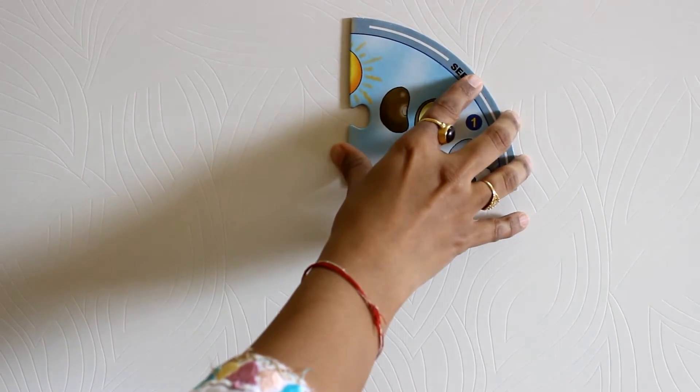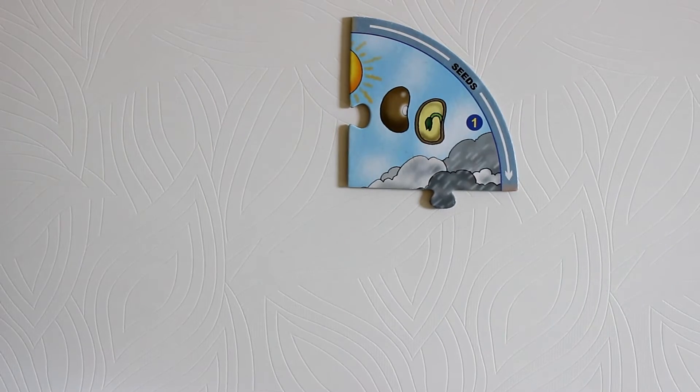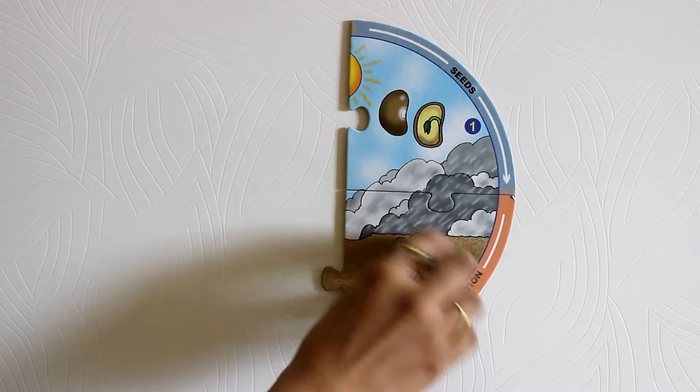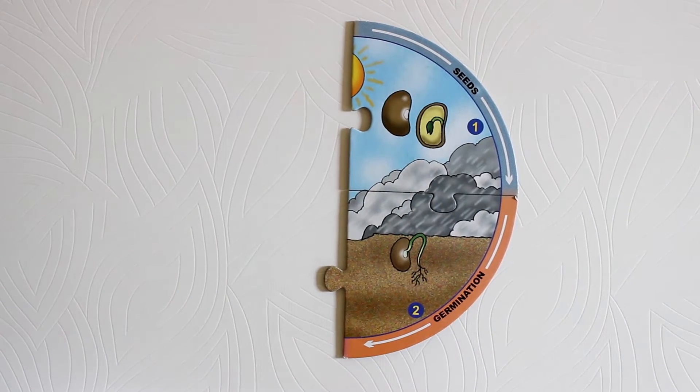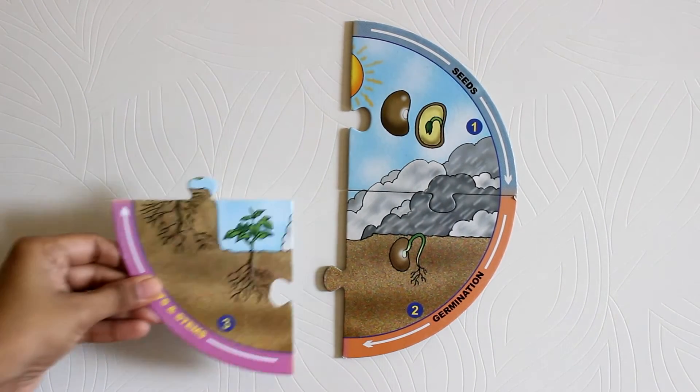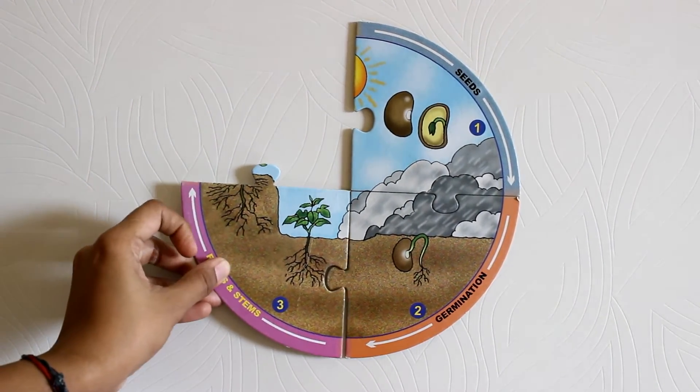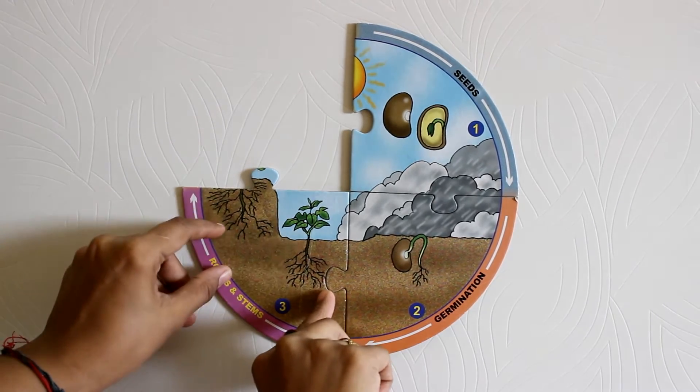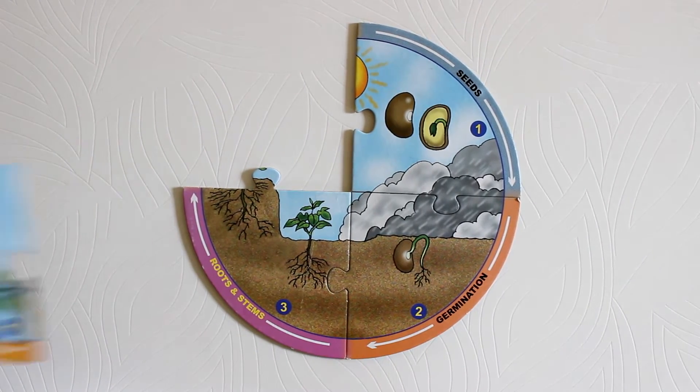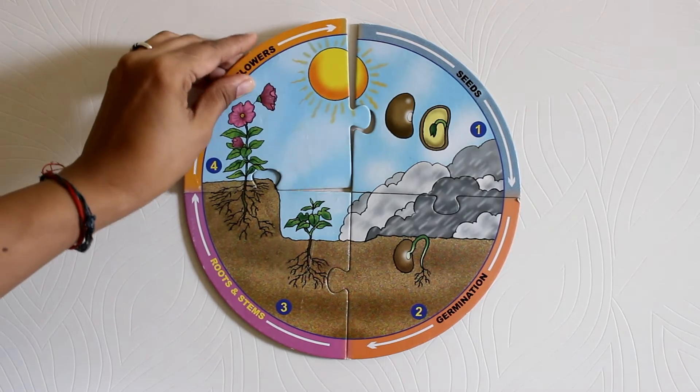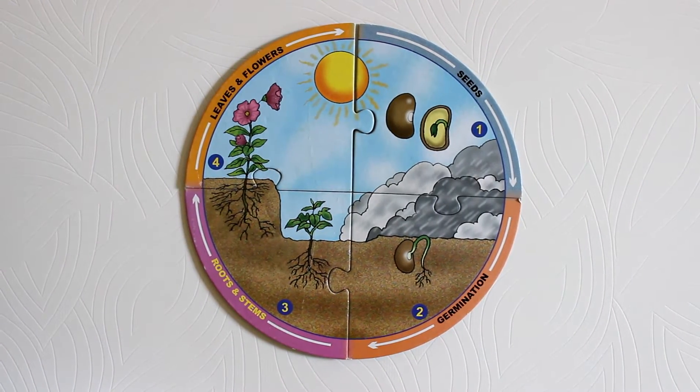The second stage shows how the seed germinates. The third stage shows the roots and the stems, and finally the fourth stage shows leaves and flowers.